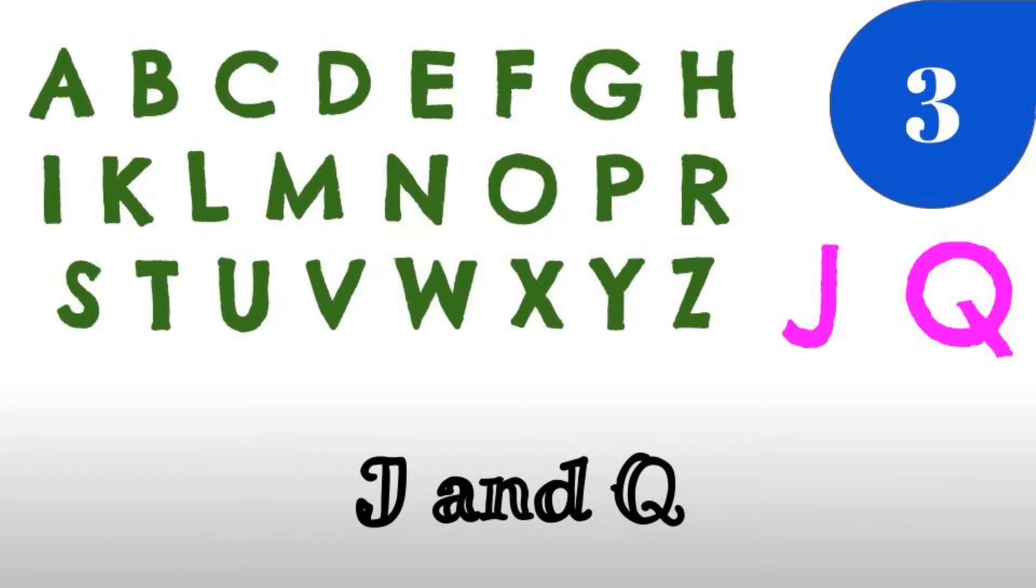Number three: J and Q. The lonely letters do not show up anywhere on the periodic table. The letters cannot be found in any of the chemical symbols or in the names of any of the elements.